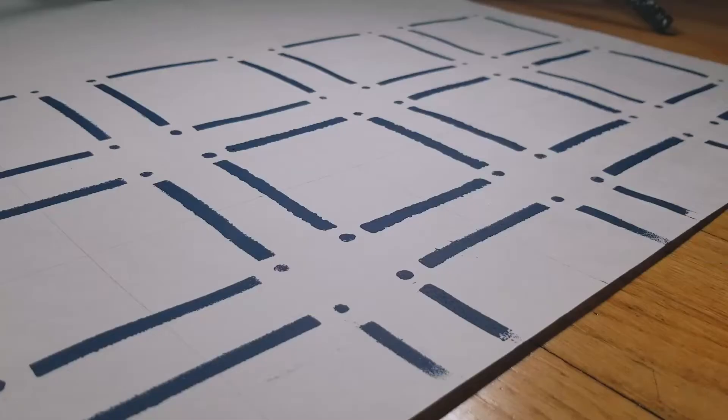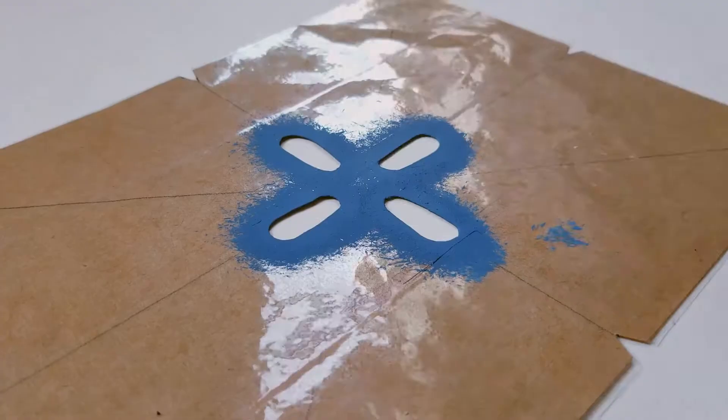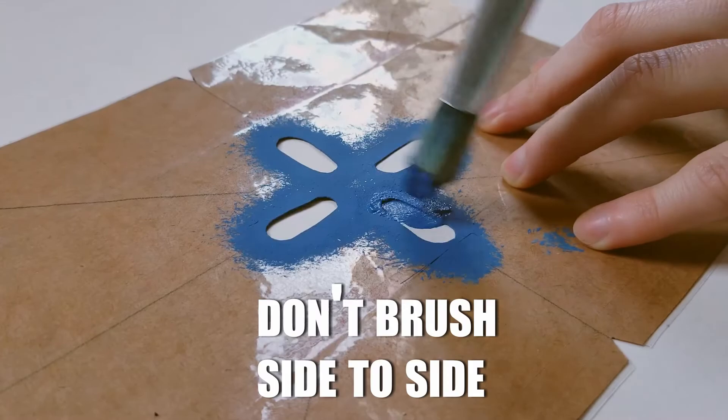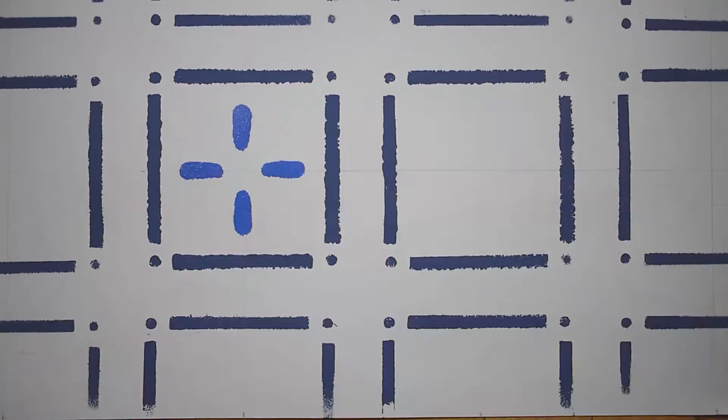There are specific stippling brushes meant for stenciling, but any brush with thick, stiff bristles will work well because you apply the paint in a dabbing motion. You should not brush back and forth because that will force paint under the stencil and the repeat won't be clean. You should also be sure to dab off excess paint before applying to the stencil.